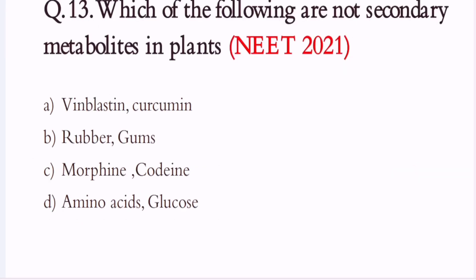Question 13. Which of the following are not secondary metabolites in plants? A. Vinblastin, curcumin. B. Rubber gums. C. Morphine, codeine. D. Amino acid glucose. The correct option is D. Amino acid glucose.